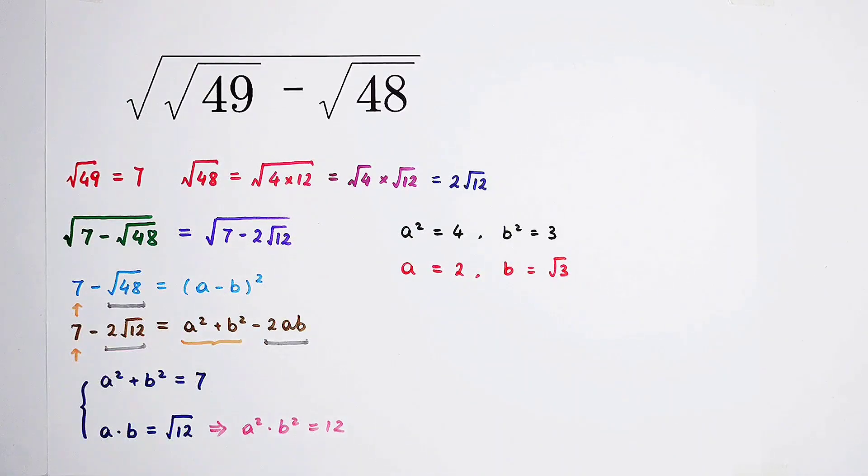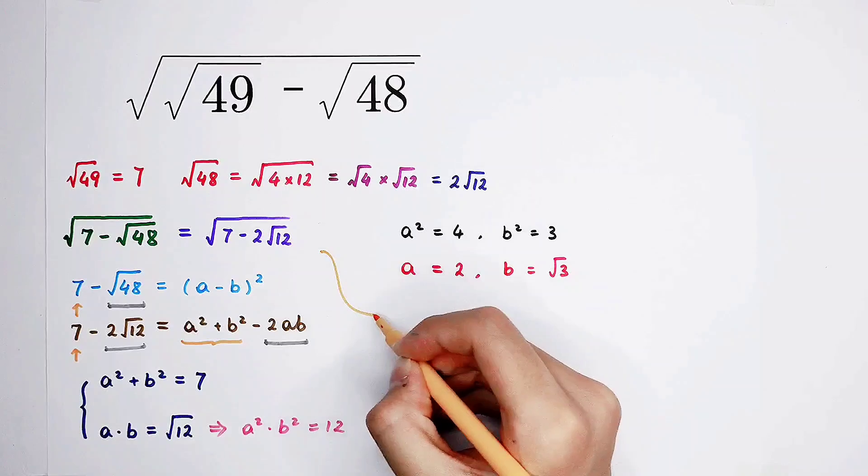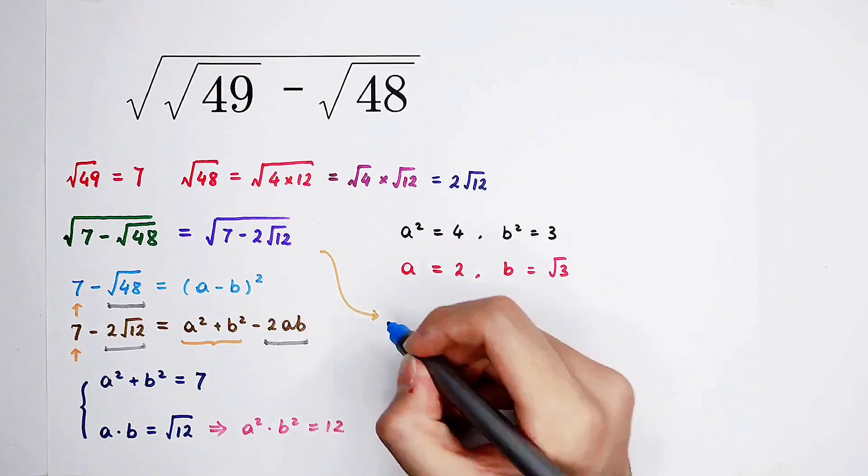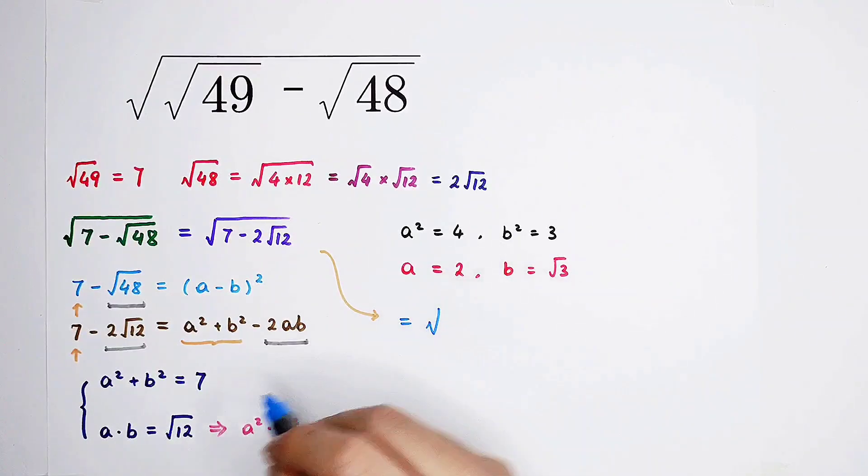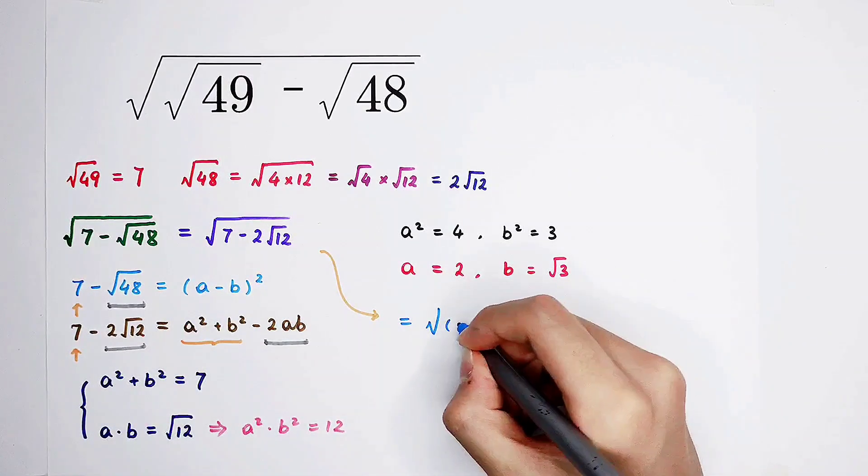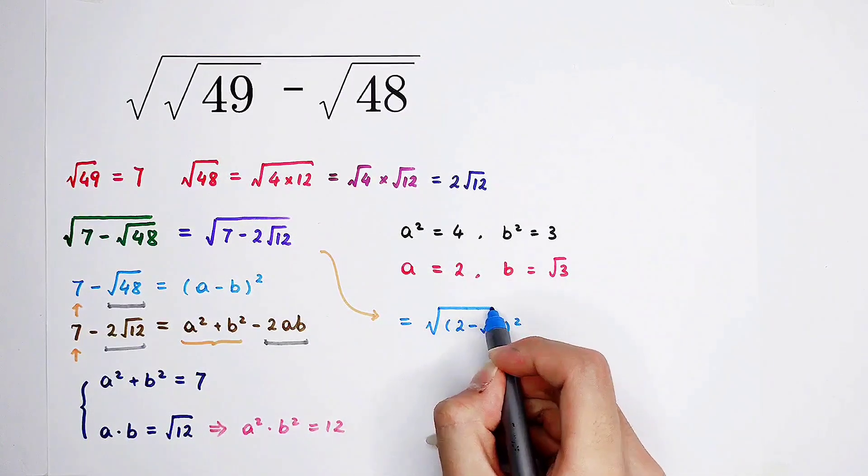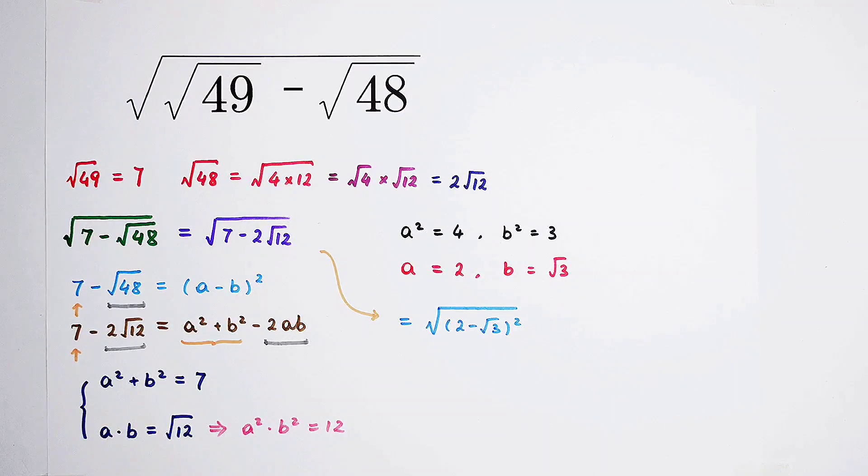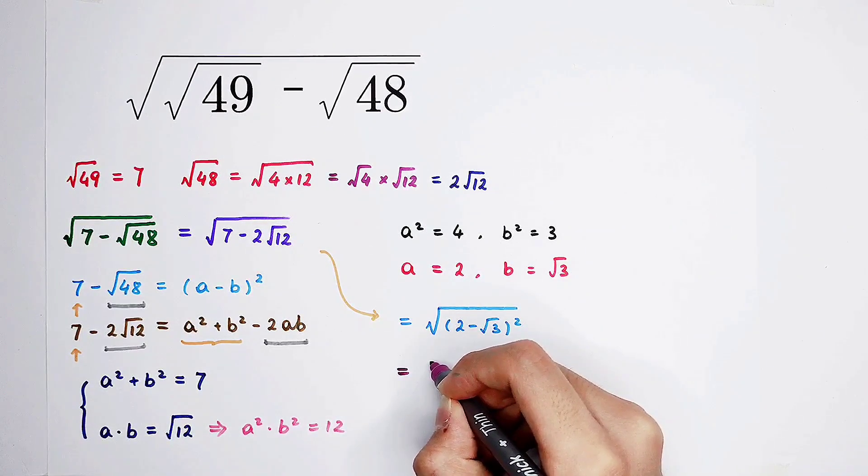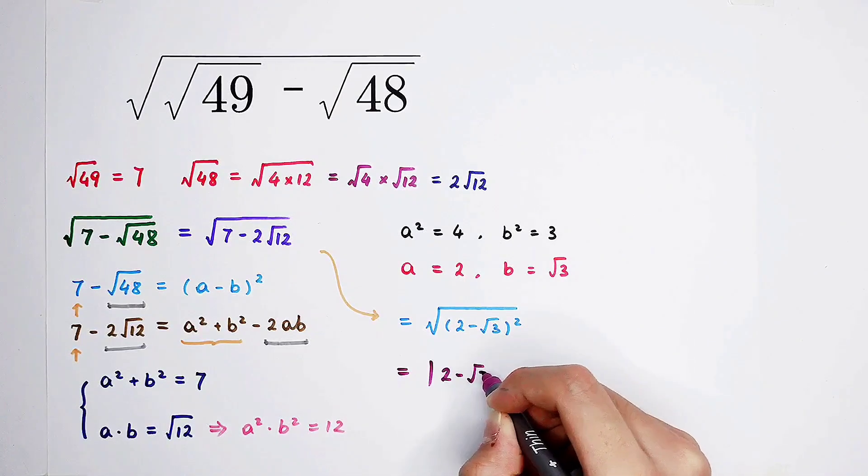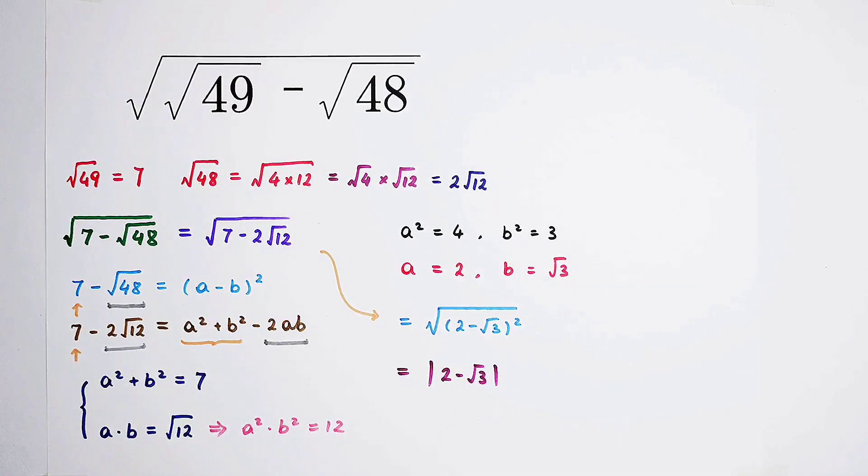So now, here, it is equal to square root of (a minus b) squared, which is square root of (2 minus √3) all squared. Okay. Then we know the result should be the absolute value of 2 minus √3. Because we know that 2 is larger than √3, so 2 minus √3 is automatically positive. So the result is 2 minus √3.